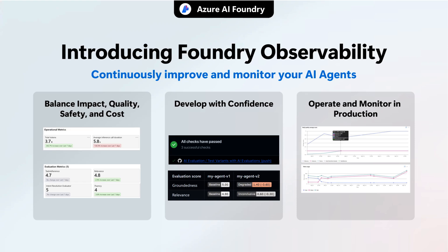Azure AI Foundry's observability tools enable continuous improvement by tracking metrics like impact, quality, safety, and cost over time, presented through clear and interactive visual trends. This real-time insight lets you balance multiple factors when iterating on your AI agents, ensuring that one metric's gain doesn't come at another's expense. Automated checks and side-by-side comparisons of different versions accelerate development by quickly spotting regressions or unexpected behaviors.